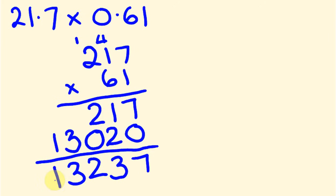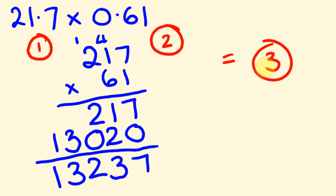So how many decimal places do we have? Let's have a look. Here we have one number behind the decimal place. Here we have two numbers behind the decimal place. So 1 plus 2 equals 3. So we have three numbers behind the decimal place here. 1, 2, 3. Our answer is 13.237.